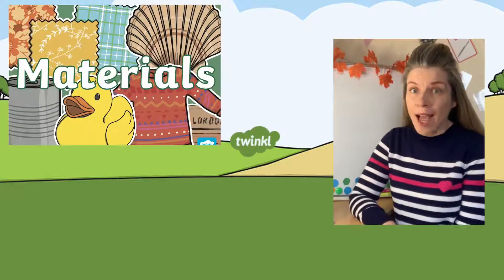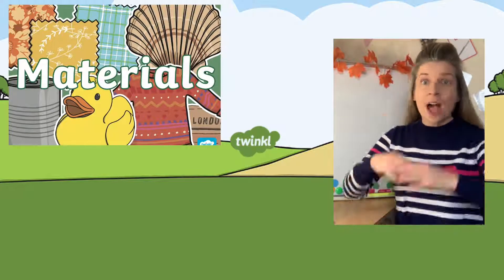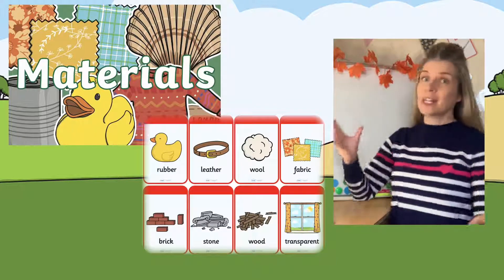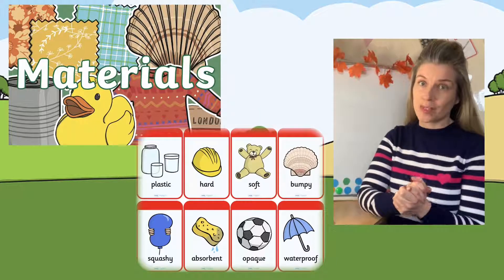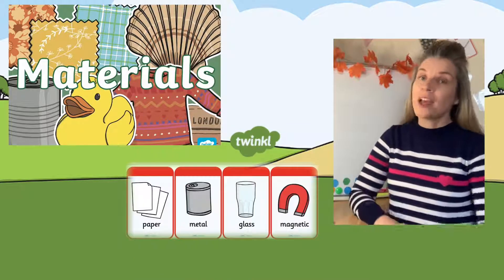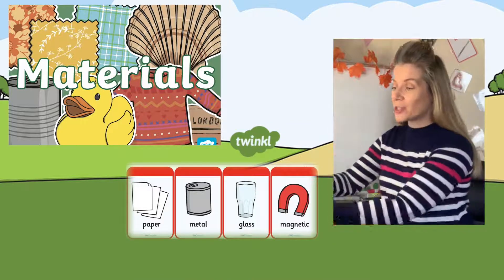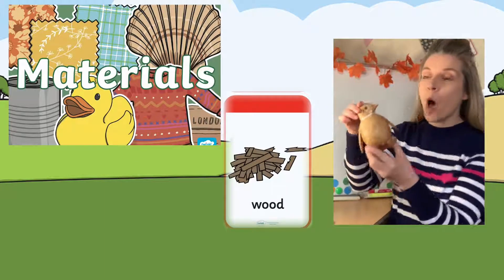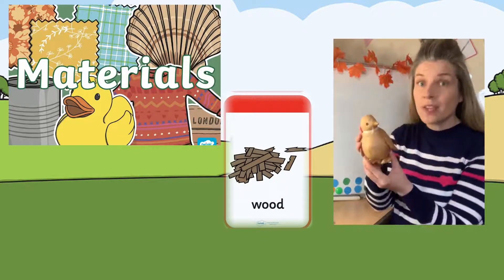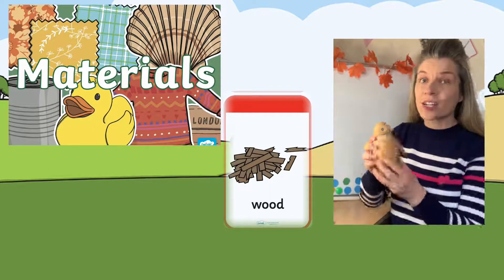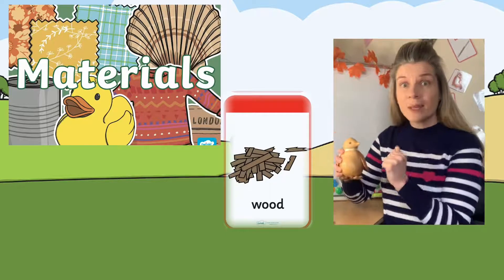As part of today's experiment we are going to be looking at materials. Materials are all around us — everyday objects that we all use. We have to remember what each material is made from. So for example, if I was to show you this, my little ornamental penguin, what material do you think my penguin is made from? That's right — wood. That's a material.